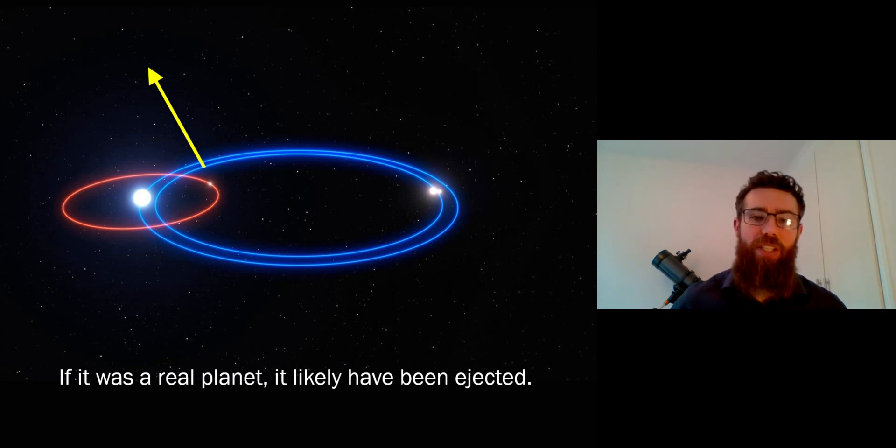Planets can be thrown out of the system due to instabilities, and this particular one, because you've got the extra stars there, there's a lot more things going on. It wasn't thought to be particularly stable, so it would likely have been ejected anyway.